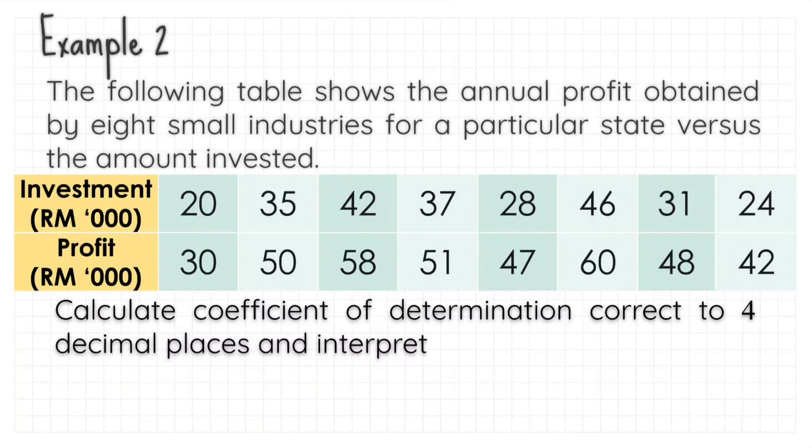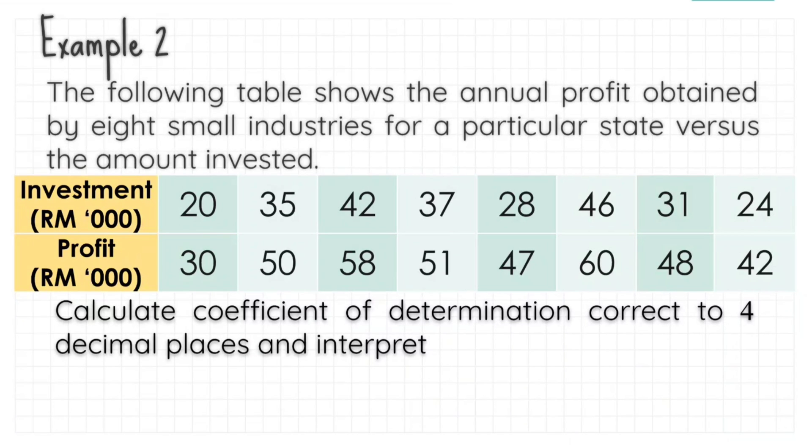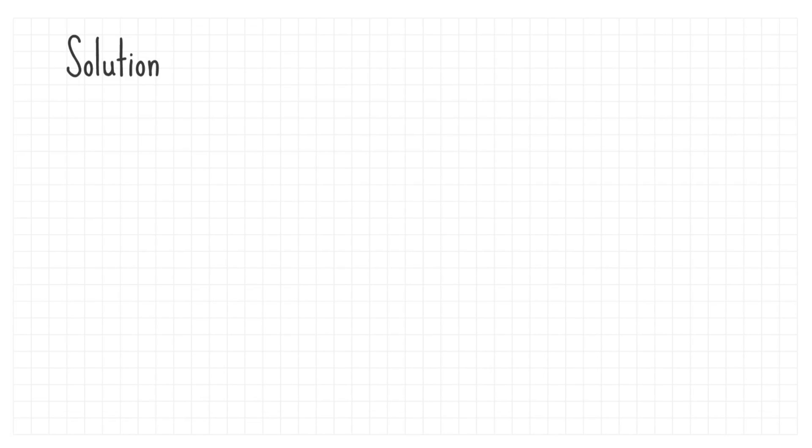Calculate coefficient of determination, correct to 4 decimal places and interpret. 8 small industries means our N is 8. List up all the summations from your calculators.